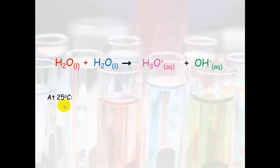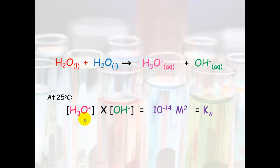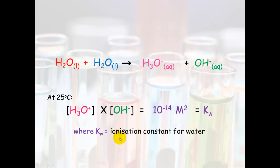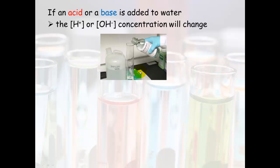So at 25 degrees Celsius, the hydronium concentration multiplied by the hydroxide concentration in any solution will always equal 10 to the negative 14 molar squared. This is called Kw, the ionization constant for water. The important thing to remember is that at 25°C, [H₃O⁺] × [OH⁻] = 10⁻¹⁴ for any solution.